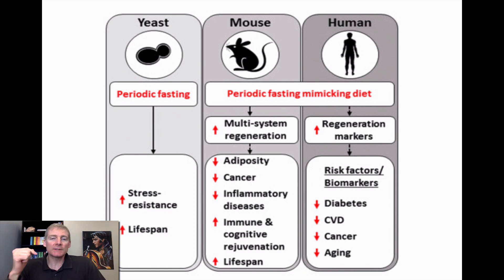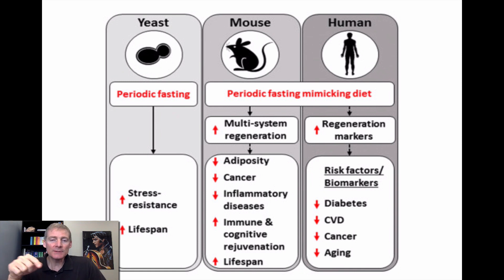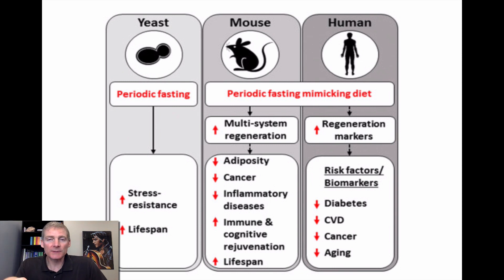Decrease in cancer, decrease in inflammatory diseases, increase in immune and cognitive rejuvenation — the immune system becomes rejuvenated and the brain gets rejuvenated, which applies to Alzheimer's and excessive computer use — and increase in lifespan. Every single one of these words is backed by science. This isn't a science fiction writer making things up. There's tons of research backing up every single word on this graphic.